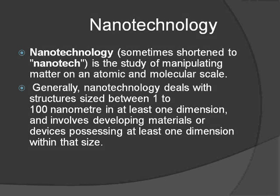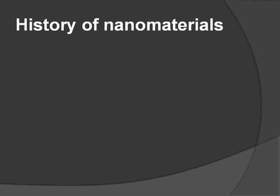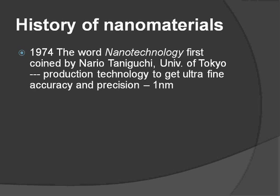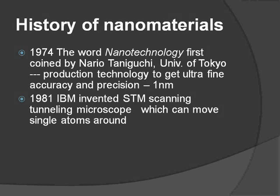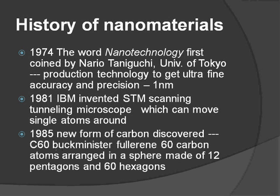Now I am going to tell you the real history behind nanomaterials. In 1974, the word nanotechnology was first coined by Nario Taniguchi of the University of Tokyo. It was first used as a production technology to achieve ultra-fine accuracy and precision up to one nanometer. In 1981, IBM invented the STM — scanning tunneling microscope — which can move single atoms around.